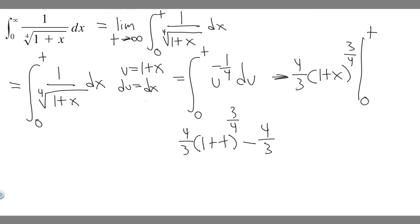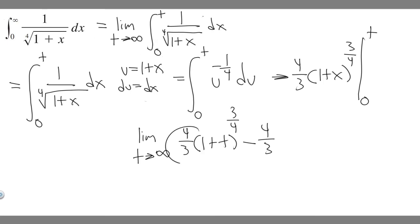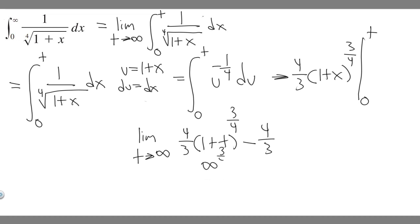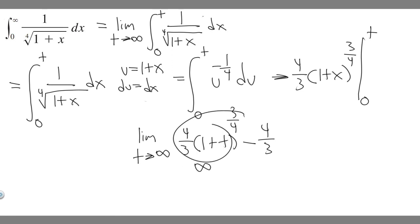Keep in mind we still have to evaluate this as the limit as t goes to infinity. So we have the limit as t approaches infinity of (4/3)(1 plus t) to the 3/4 minus 4/3. Plugging in infinity: 1 plus infinity is still infinity, infinity to the 3/4 is still infinity, and infinity times 4/3 is still infinity. Infinity minus 4/3 is still infinity.